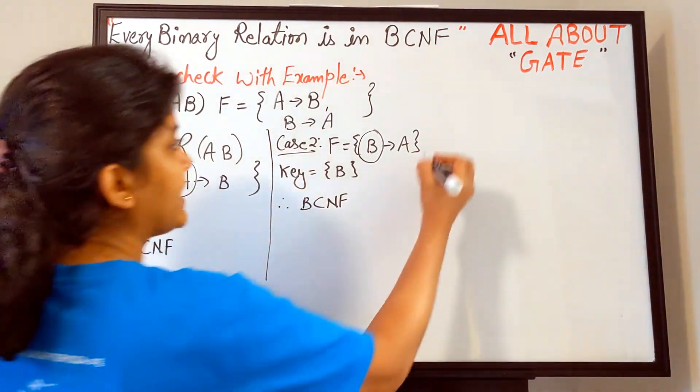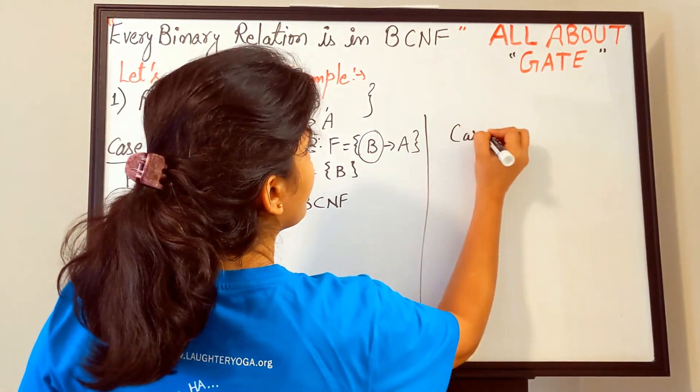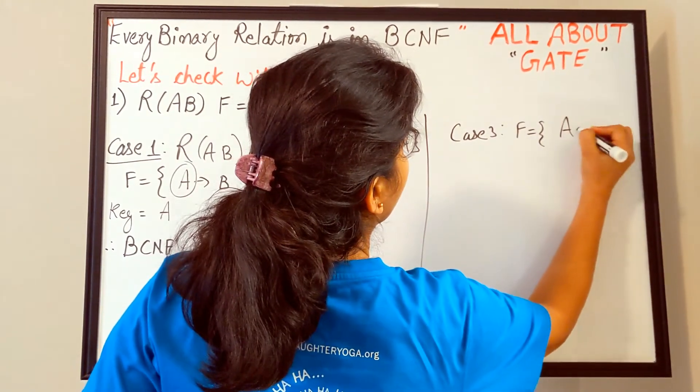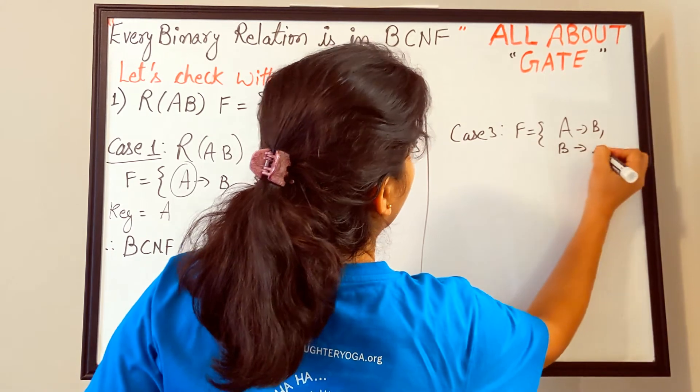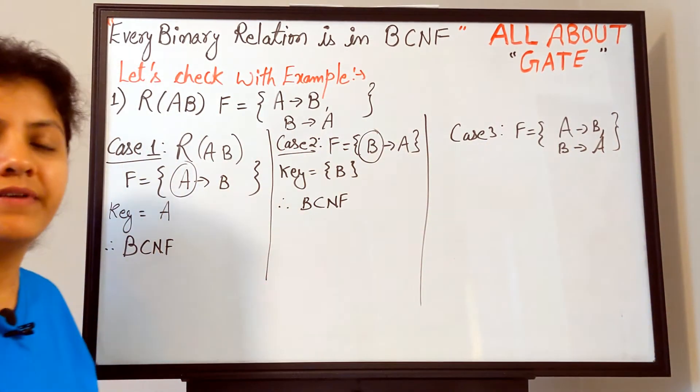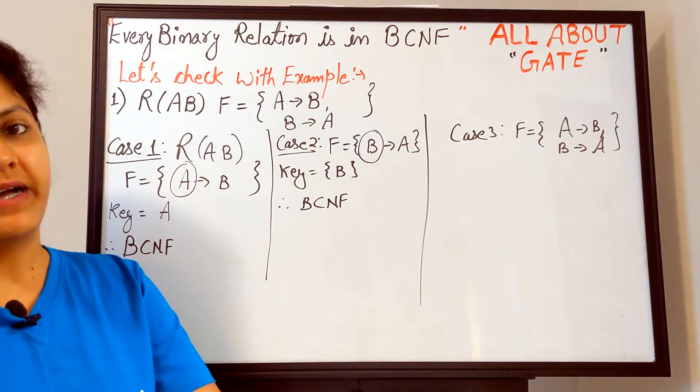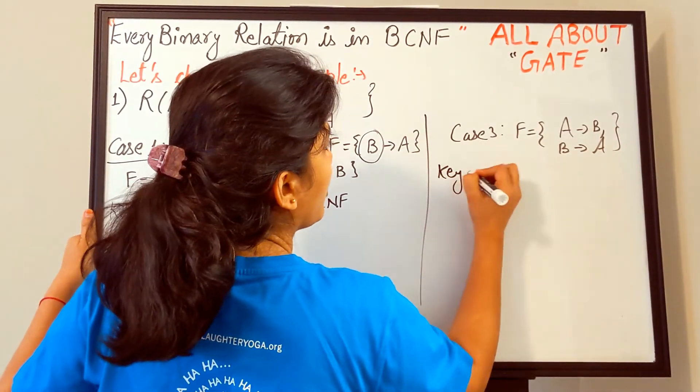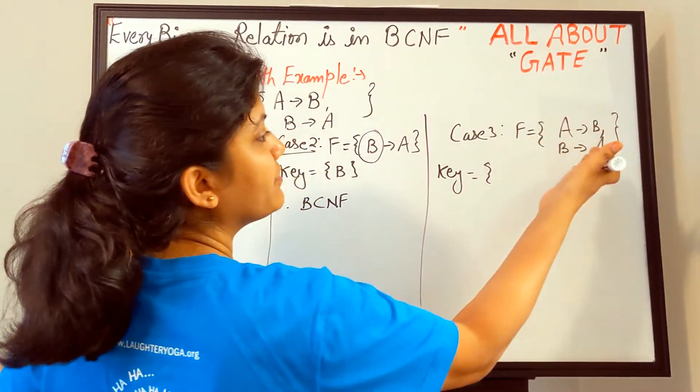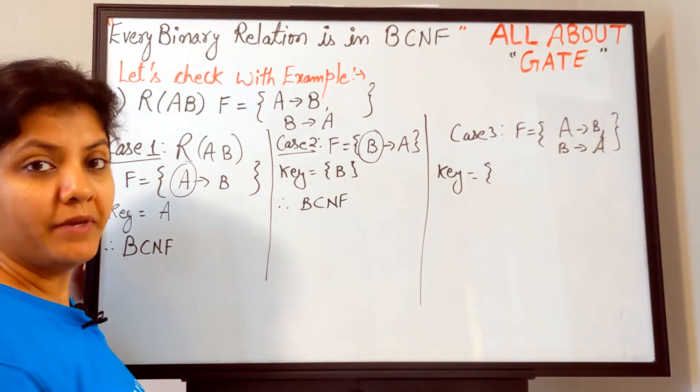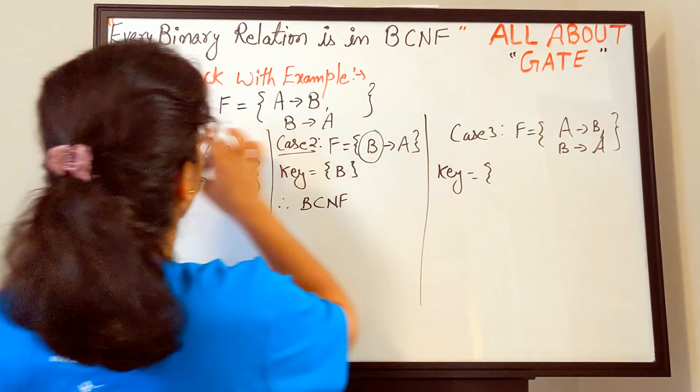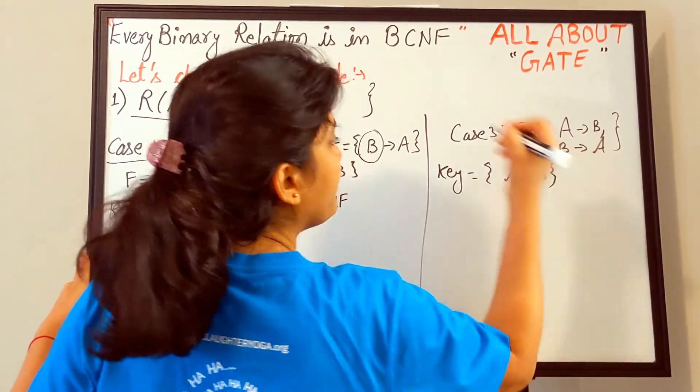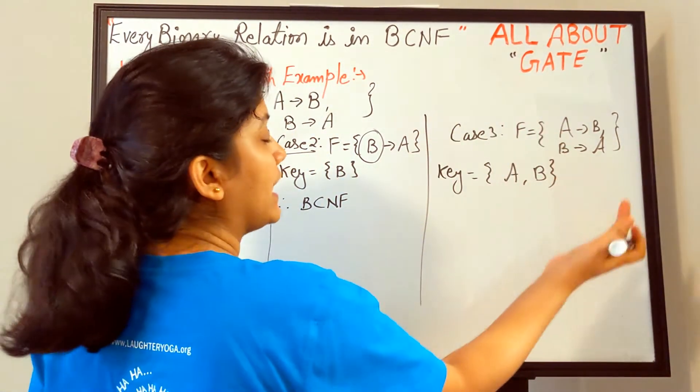Here you have seen in the two cases when we took one of the functional dependency, the other functional dependency—in both the cases it is in BCNF. Now let's take the third case. What should we do? Let's take the functional dependency both A to B as well as B to A. That's very much possible. All of you have seen in the previous examples that A can determine the value of B and also B can determine the value of A. But in such a case, what becomes the key? A closure gives you A,B and B closure also gives you A,B.